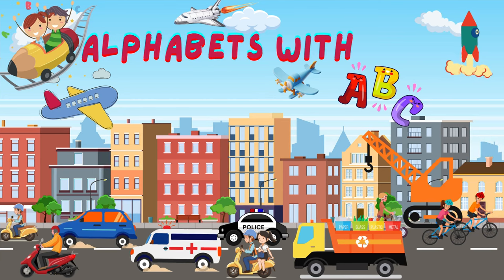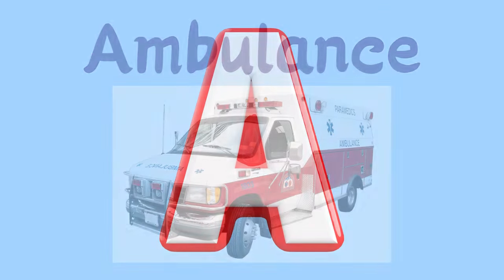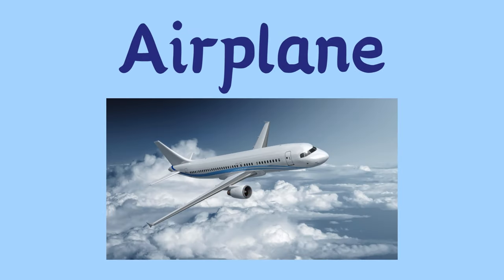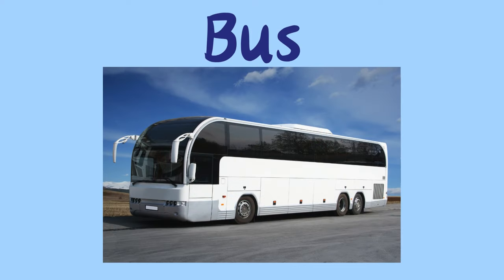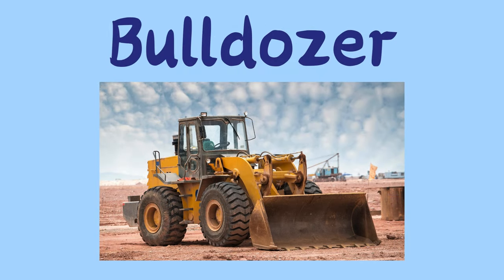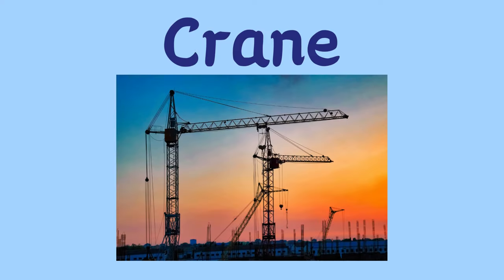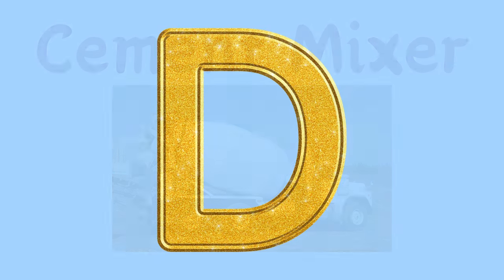Alphabets with Vehicles. A is for Ambulance. A is for Airplane. B is for Bus. B is for Bulldozer. C is for Crane. C is for Cement Mixer.